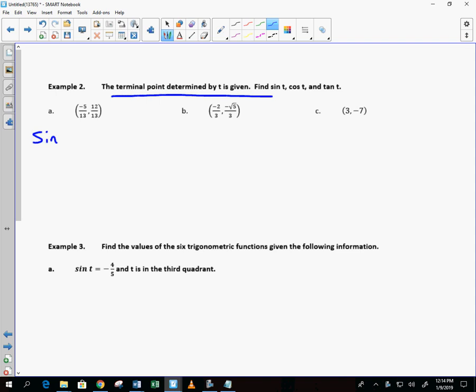It says find sine of t, cosine of t, and tangent of t. Do you remember which value is sine? So, it's 12 over 13. Do you remember which value is cosine? Negative 5 over 13.